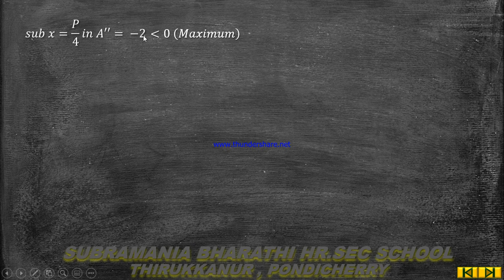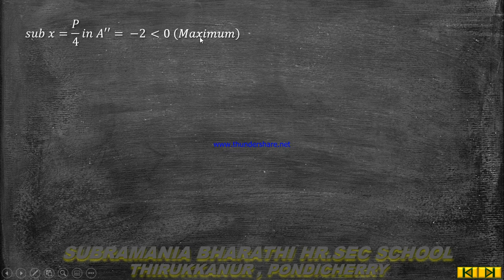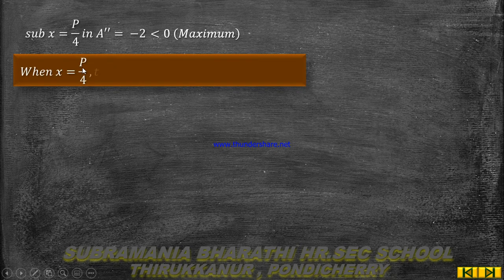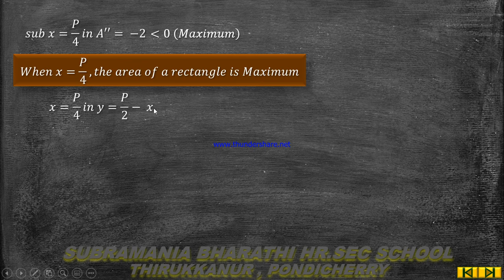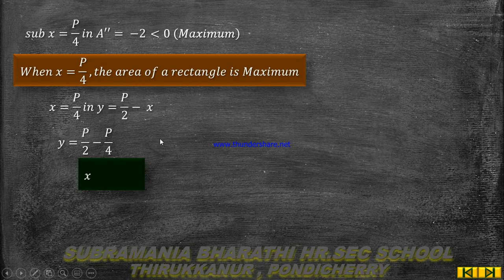Since d²A/dx² = -2, which is negative, the area is maximum. Setting dA/dx = 0 gives x = P/4. The area of the rectangle is maximum when x = P/4.